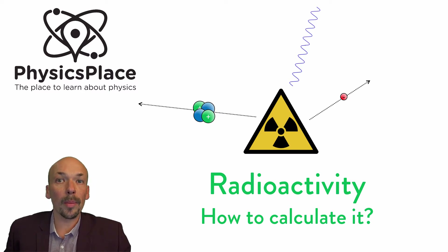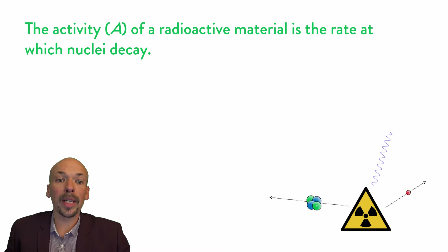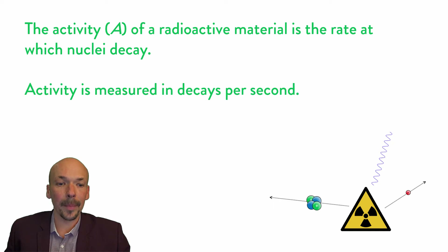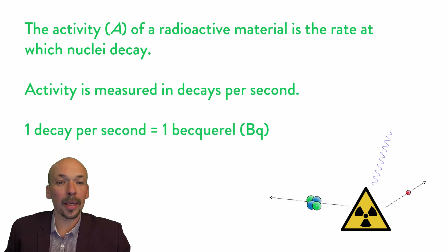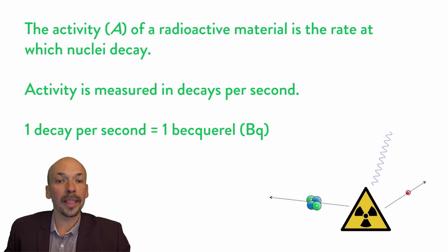In my previous video about radioactivity, I already explained shortly what radioactivity is. As a summary, radioactivity, capital A, of a radioactive material is the rate at which nuclei decay. Activity is measured in decay per second, and 1 decay per second is 1 becquerel, or Bq for short. So becquerel is the unit of the quantity activity, which is capital A.